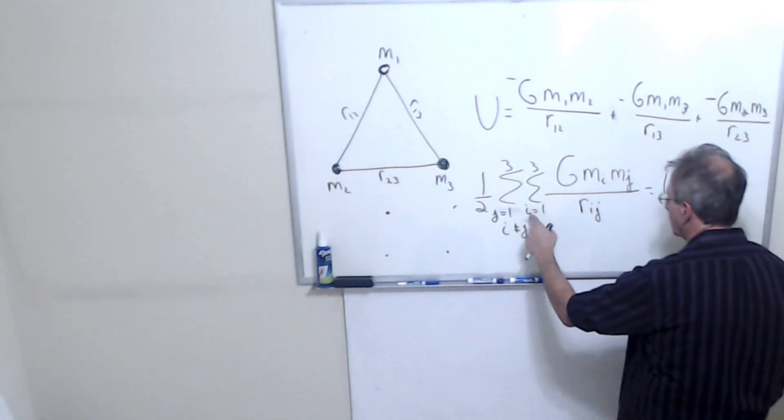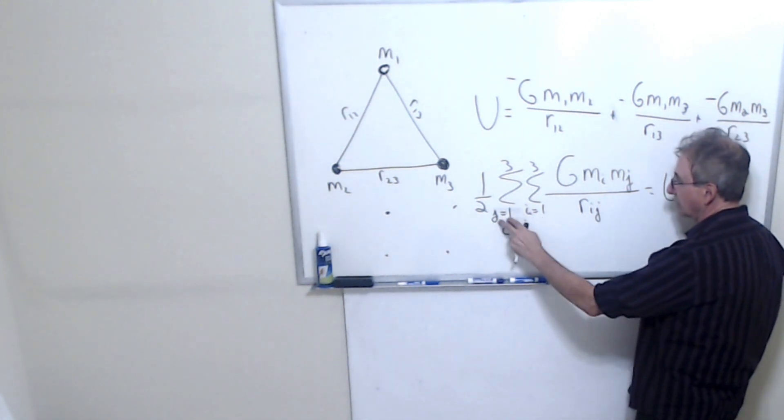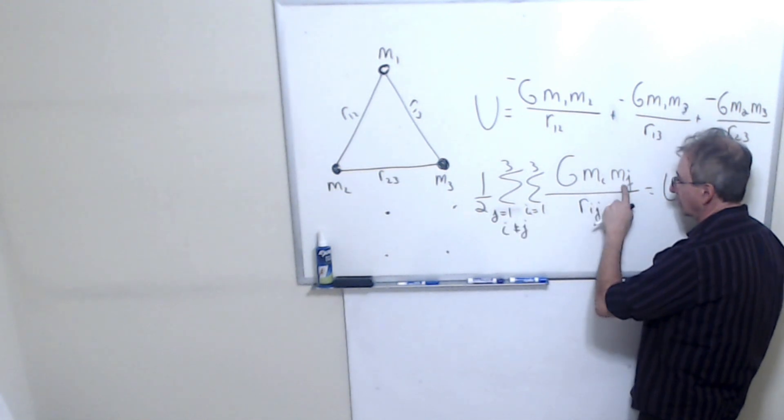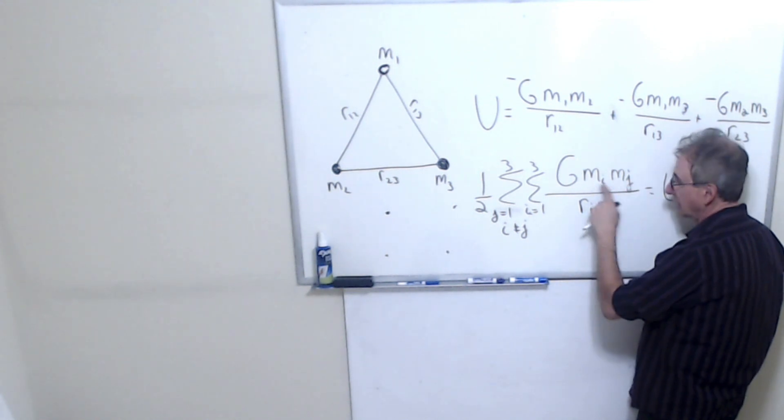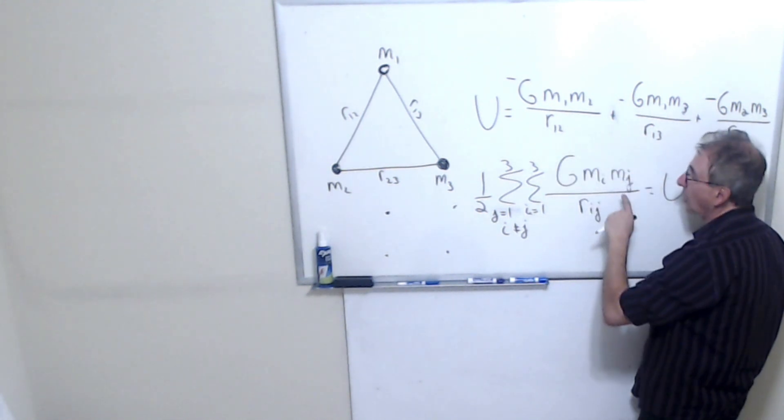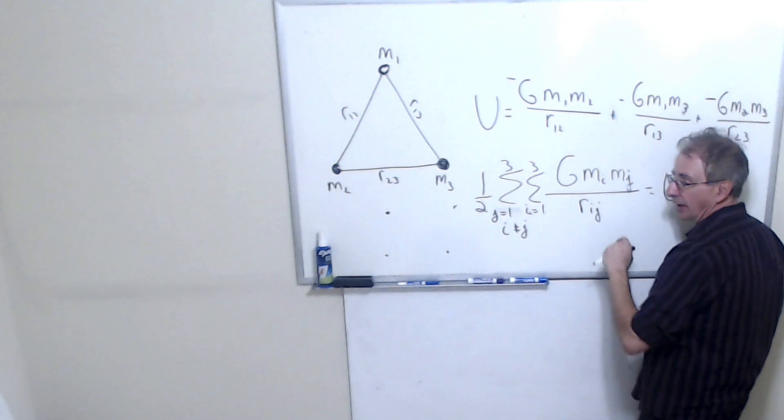Why do I have to throw in one half? Well, when I do this summation, what does this summation mean? Well, for J equals one, I'm going to put the values of one and two. For J equals one, here I'm going to put the values of I equals two and I equals three. For J equals two, I'm going to put the values of one and three for I. For J equals three, I'm going to put the values of one and two for I. What I've done though is I've counted each one of these twice by doing that. So I have to put a one half in the front.